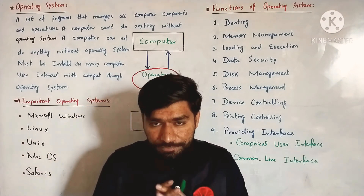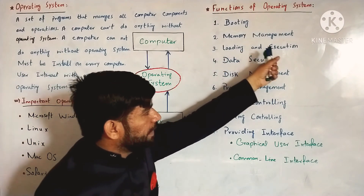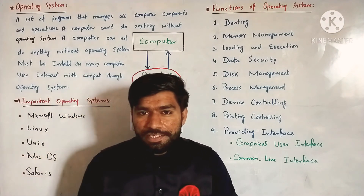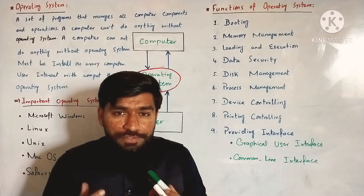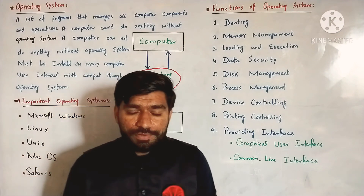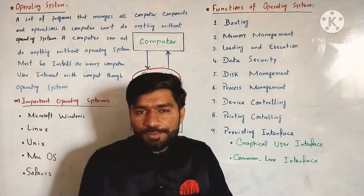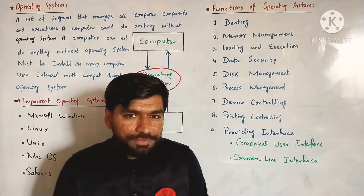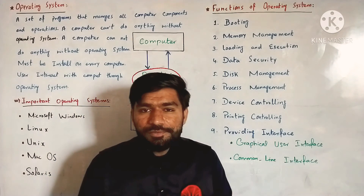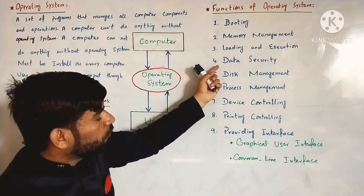The third function of the operating system is loading and execution. Loading and execution means that the operating system loads different programs into memory. When any program or process needs to execute, it is first loaded into memory and then the CPU executes it.